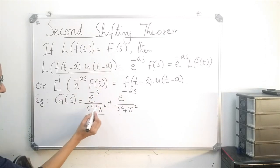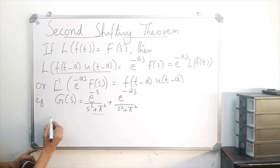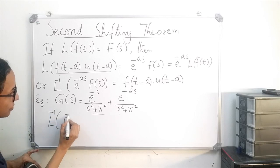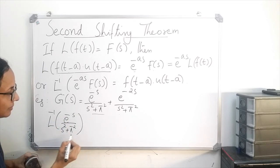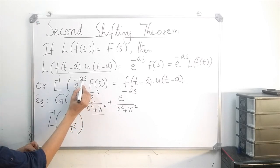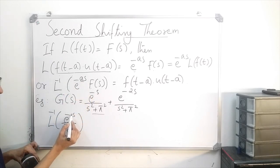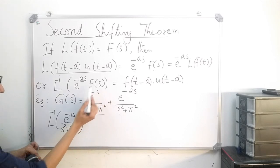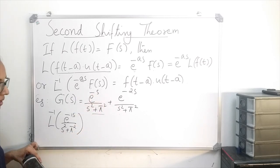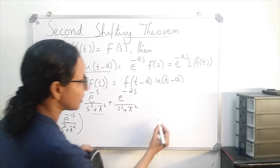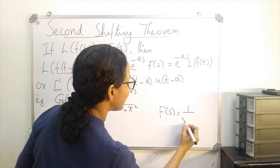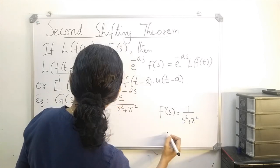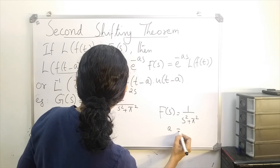Consider only the first term. I am going to find the inverse Laplace of e raised to minus s divided by s squared plus pi squared. Comparing this with the formula, the value of a is 1, and f of s is 1 divided by s squared plus pi squared.